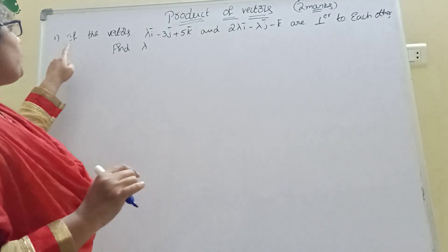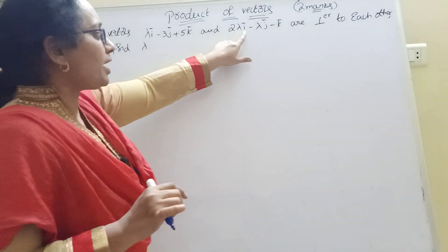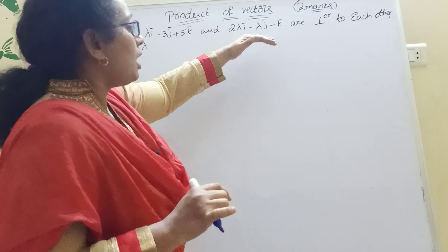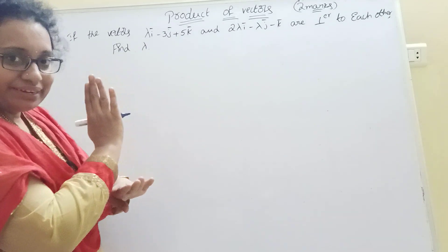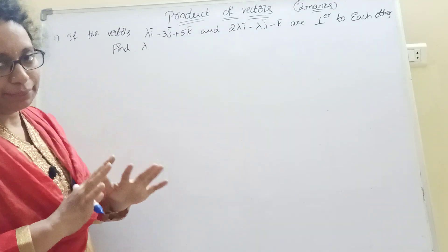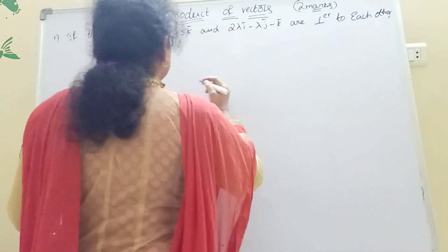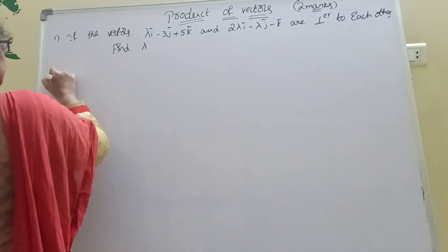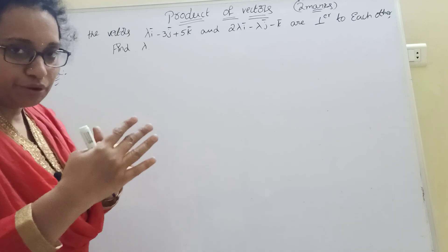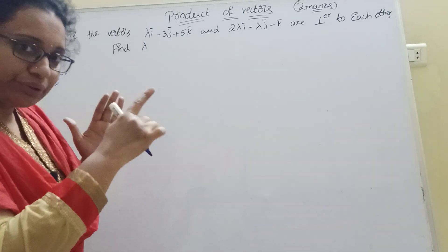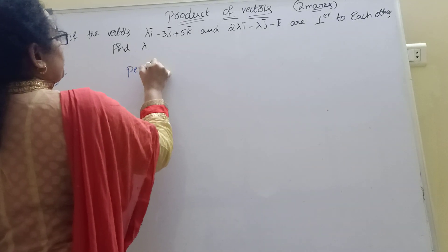The first 2-mark problem: if the vectors lambda i minus 3j plus 5k and 2 lambda i minus lambda j minus k are perpendicular to each other, then find lambda. Here, two vectors are given and they are perpendicular to each other. There are two important formulas — one for perpendicular vectors and one for parallel vectors.